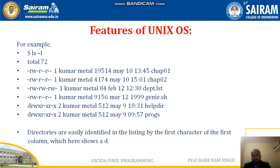Each file is displayed with its name in the last column and 6 more attributes. For the file named chapter01, it shows dash rw dash r dash dash r dash dash. The first character is a dash, which means it is a regular file — that is, a text file.